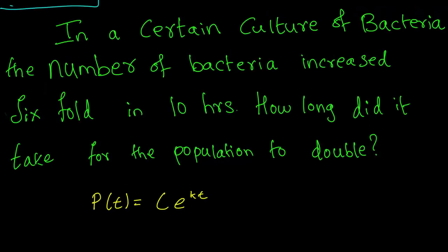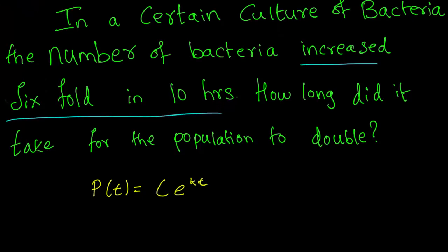The only information we have right now is that the number of bacteria increased six-fold in ten hours. How we write that down in terms of mathematical equations is that we can compare the population of bacteria at time 0 and the population of bacteria at time 10. So here, time is going to be in the unit of hours. So we know that 6 times P(0) equals P(10). This is what it means to say that the population of bacteria increased six-fold.